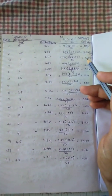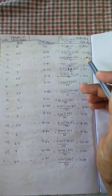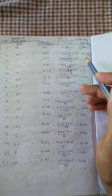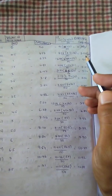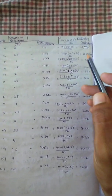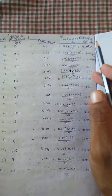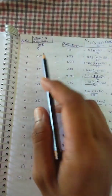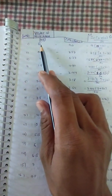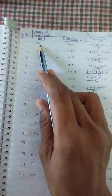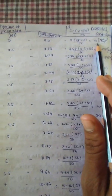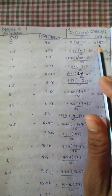In conductometric titration of a strong acid with a strong base, first we have to determine the corrected conductance of the strong acid. Here, when 0 ml of sodium hydroxide is added, the obtained corrected conductance is 9 mS.